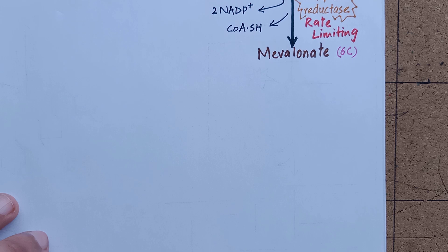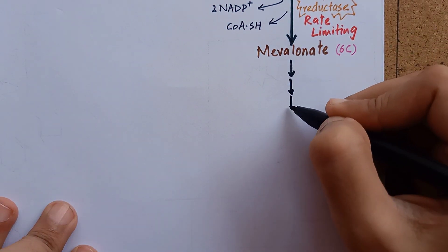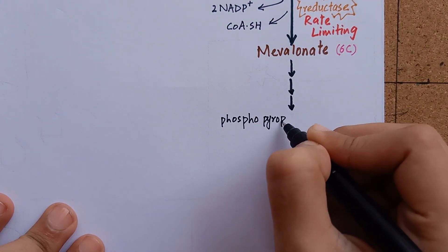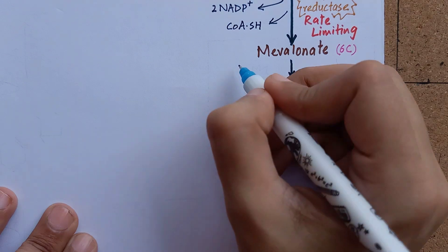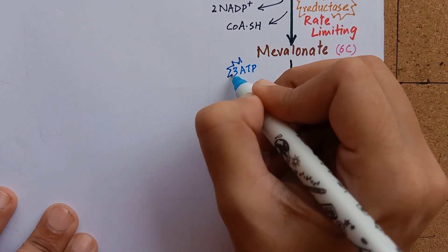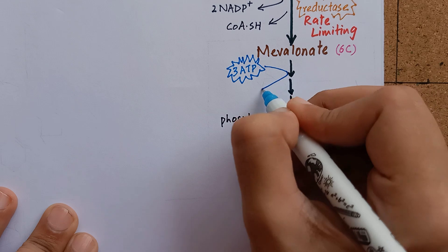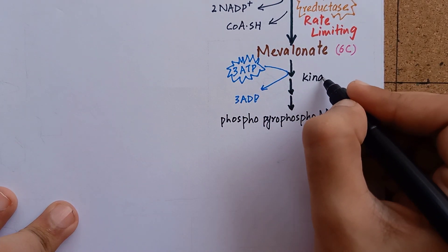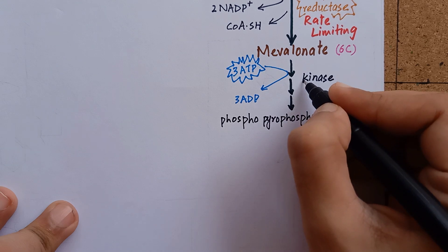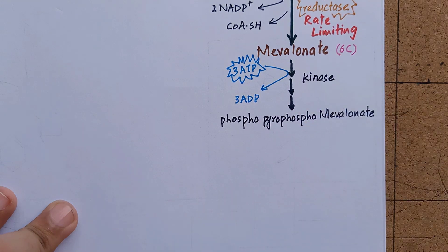Moving on from mevalonate. In a 3-step reaction, mevalonate is converted to phosphopyrophosphomevalonate. Three moles of ATP donate their phosphate groups for this phosphorylation and itself become ADP. You have to remember that whenever there is phosphorylation of a substance, the enzyme will be kinase. So in this reaction, the enzyme is kinase.